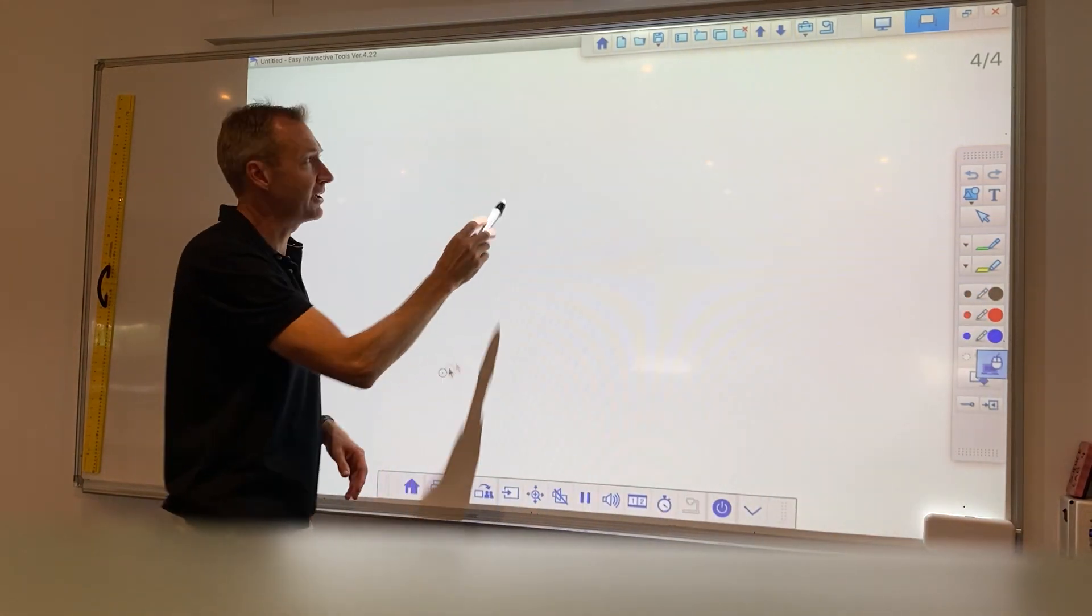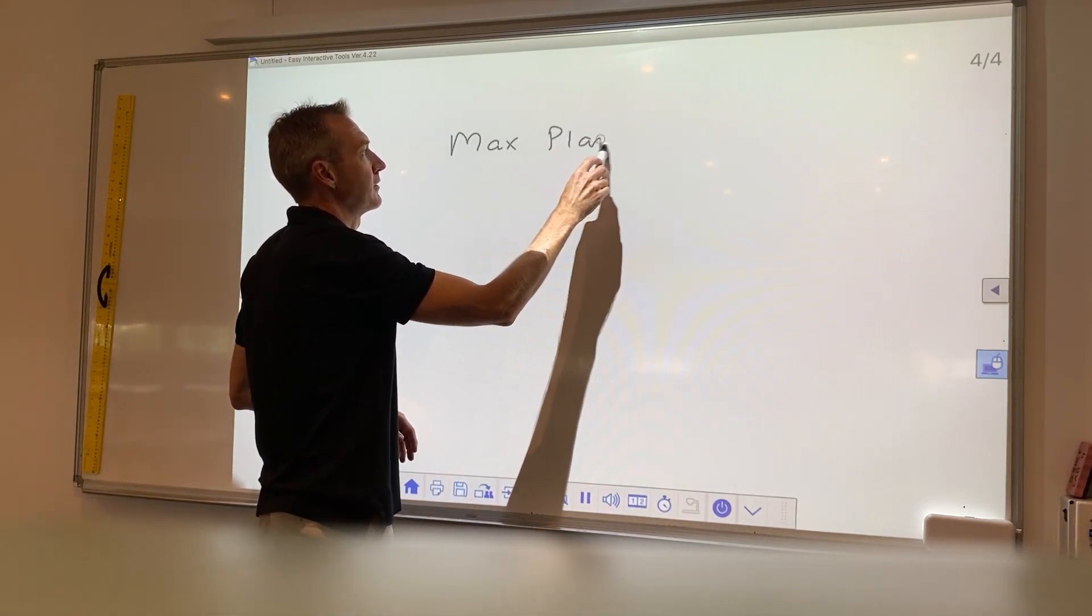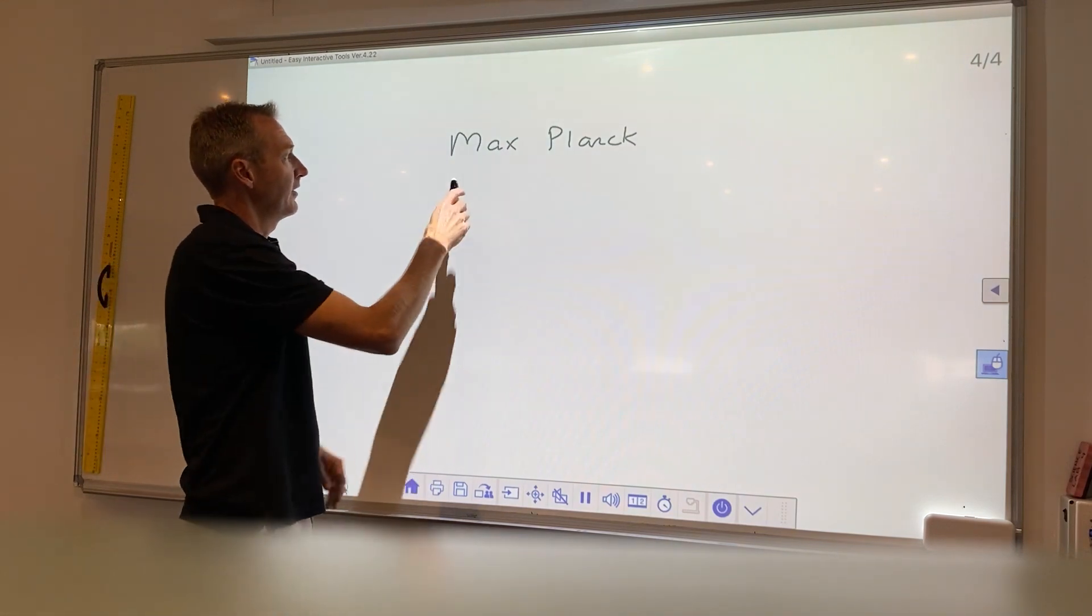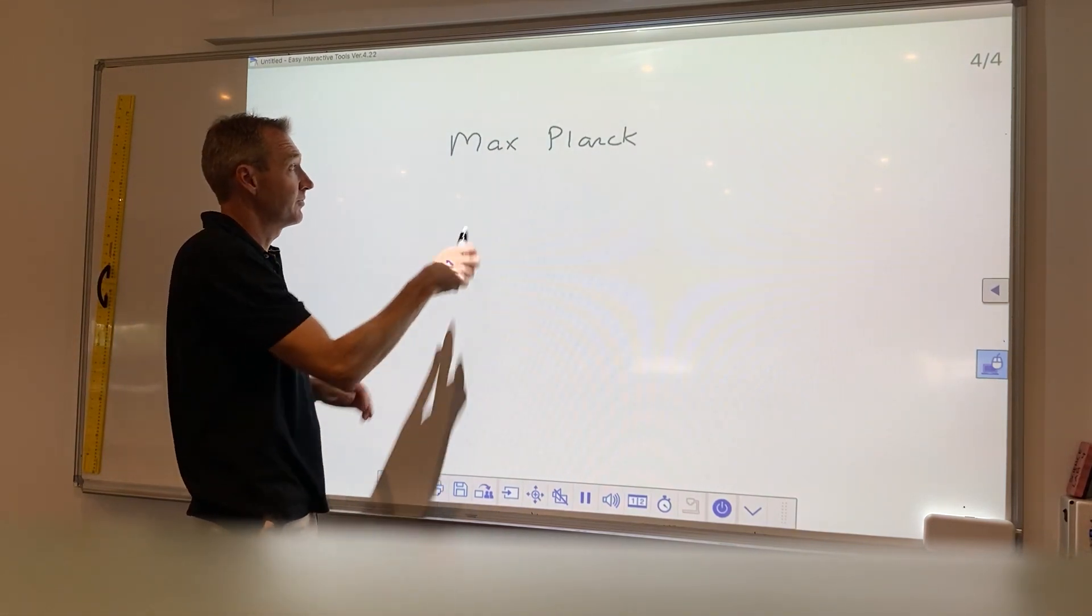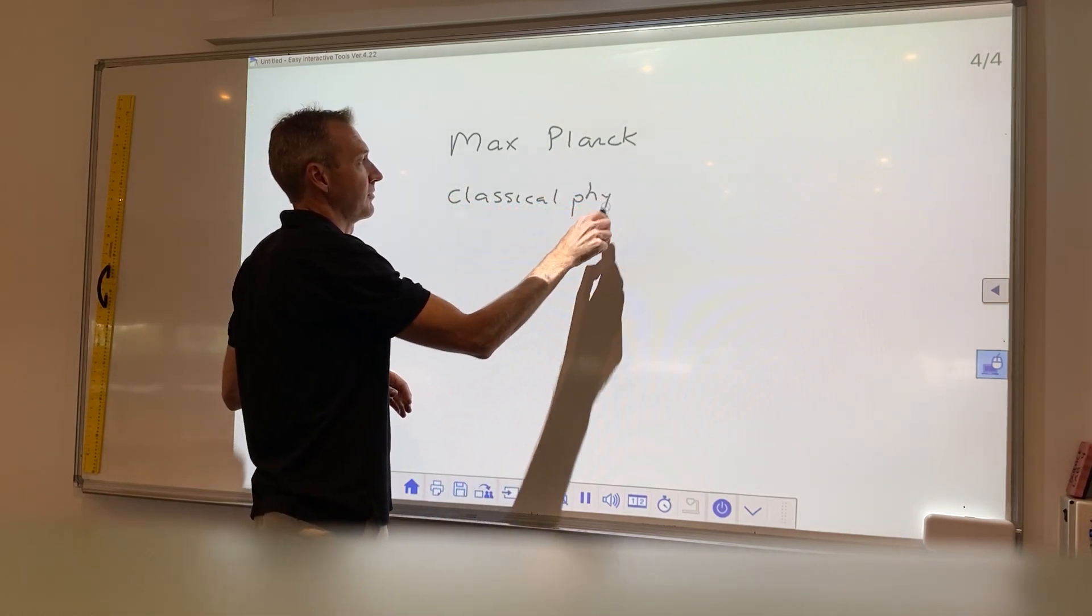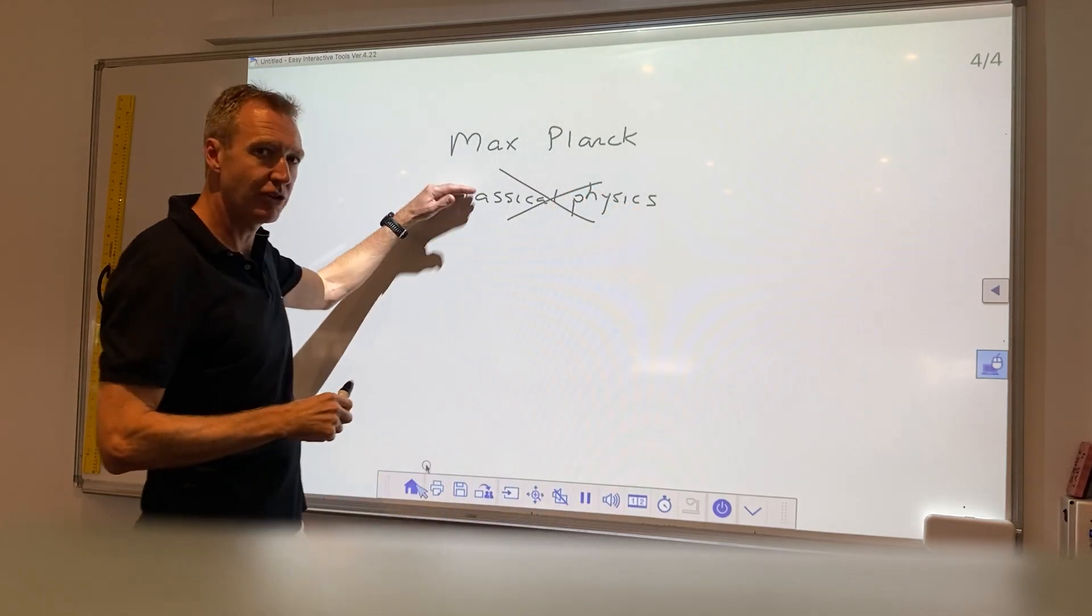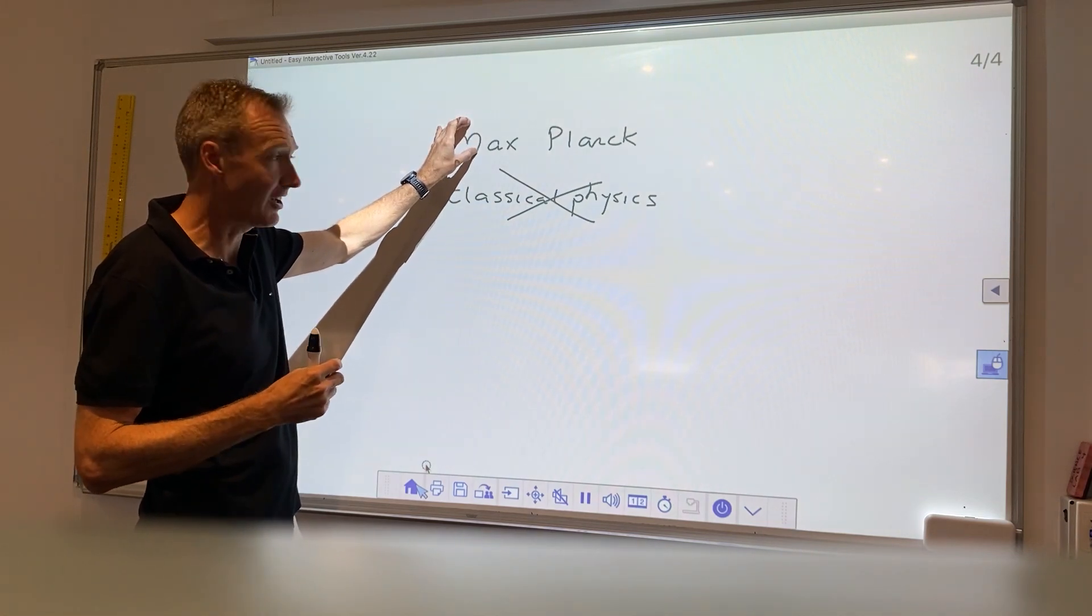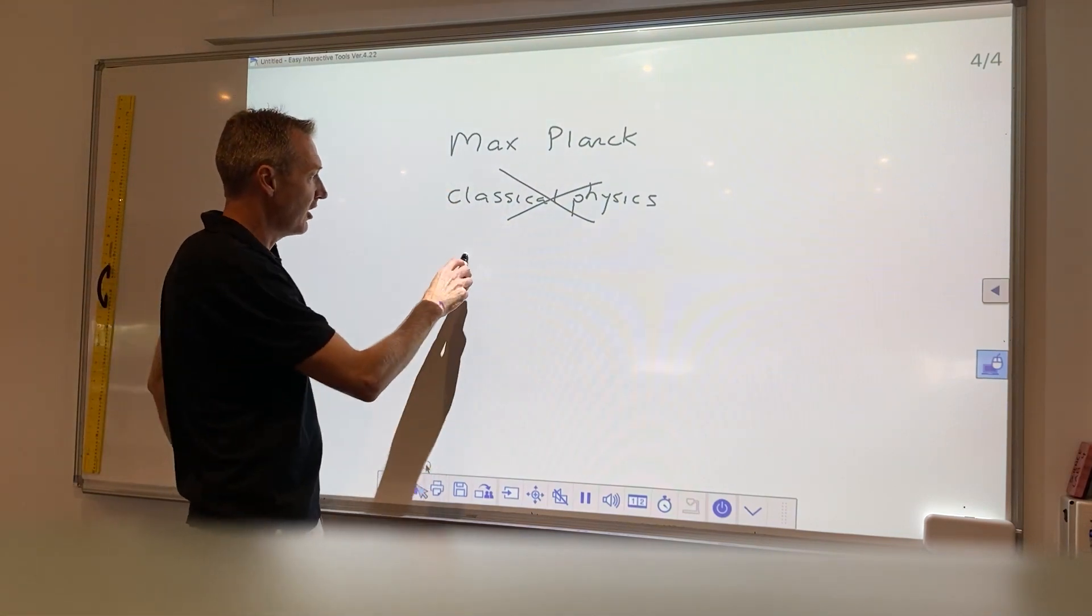Now, Max Planck was a pretty good scientist. He worked all this out through experimentation, but he tried to use classical physics to work it out, and he couldn't get the numbers to agree. So Max Planck was fantastic, and he used experiments to work this out, but he couldn't work out the mathematics. It actually took Einstein.